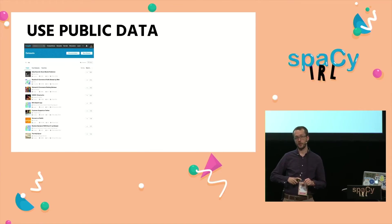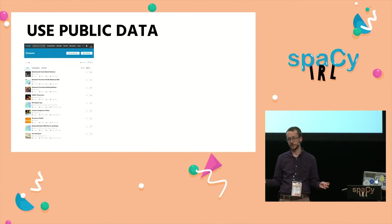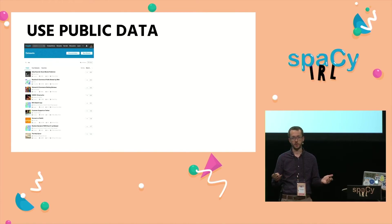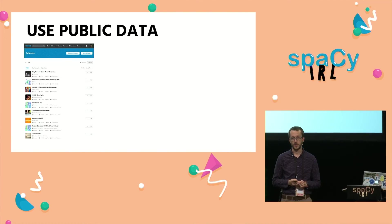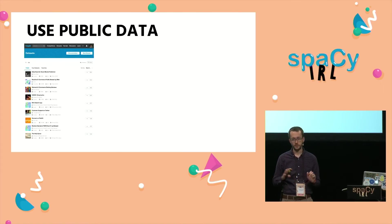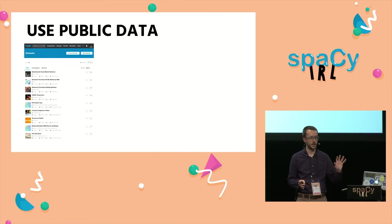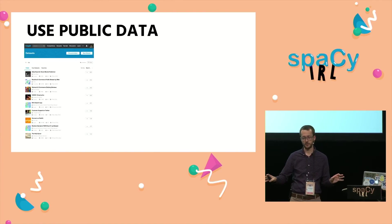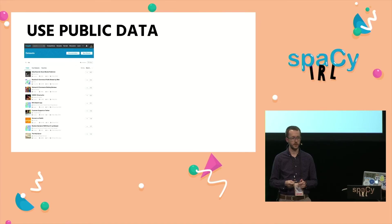If you're dealing with applied natural language processing problems, a lot of times you have issues with using client data or data that you don't have permission to share publicly. I would propose that we use public data. There are some great data sources out there. One that I've used a lot is Kaggle. They hold machine learning competitions and also have a giant datasets repository — you can search natural language processing on there to get some fantastic datasets.